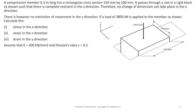The compression member is 0.3 meters long with a rectangular cross-section of 150 millimeters by 100 millimeters. It passes through a slot in a rigid block as shown in the diagram.